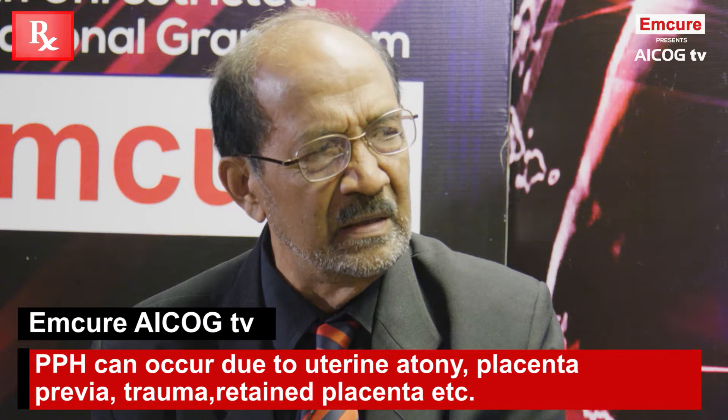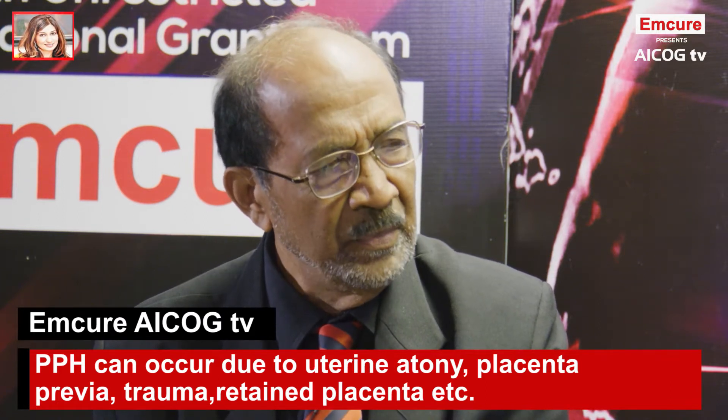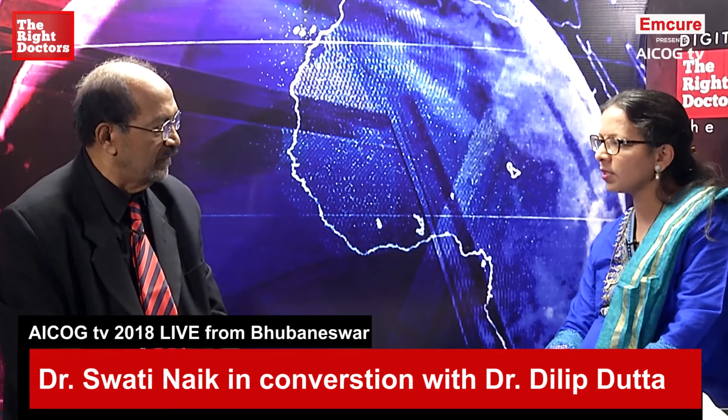When we talk about PPH — postpartum emergency after delivery — 80 to 90% of cases are due to uterine atony, where the uterus is not contracted. In normal delivery, bleeding of 100 to 200 ml is considered mild because blood is diluted during pregnancy. Blood loss of 200 to 500 ml is considered moderate, and above 500 ml — which leads to shock and other complications — is classified as severe PPH.